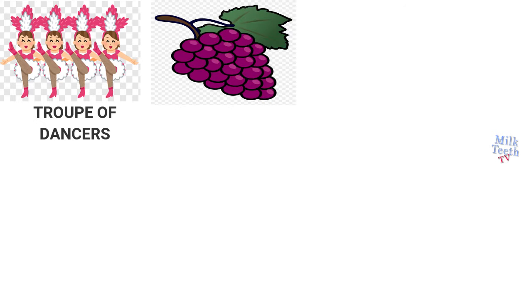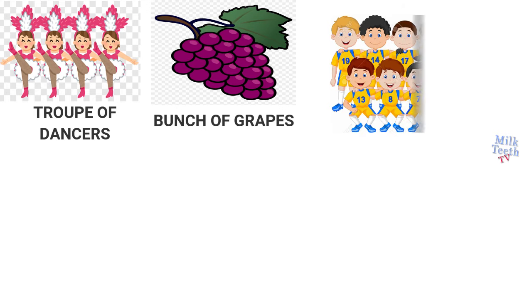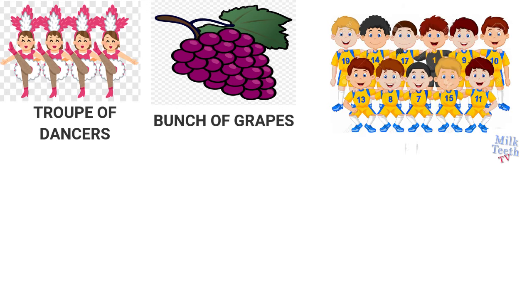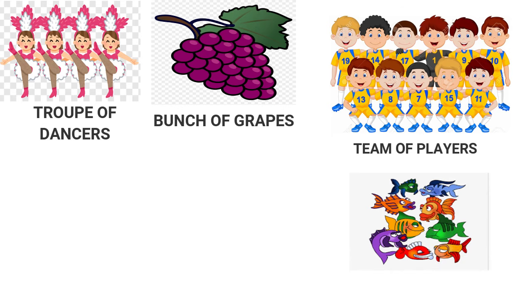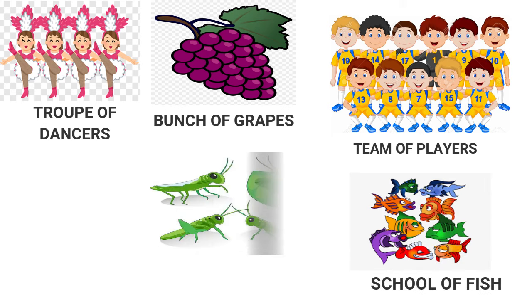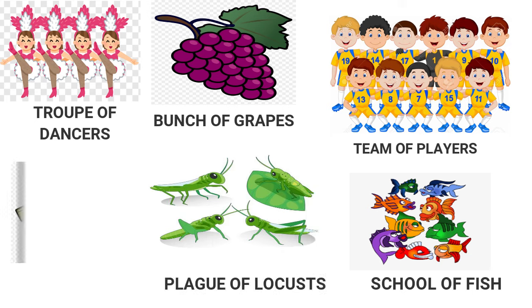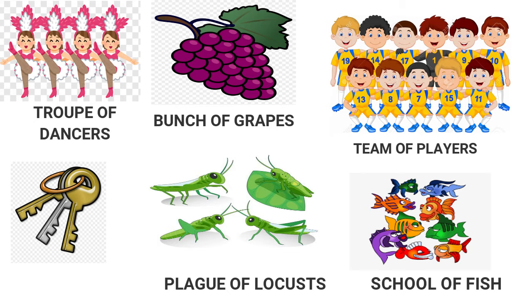Now let's revise. A troop of dancers, a bunch of grapes, a team of players, a school of fish, a plague of locusts, a bunch of keys.